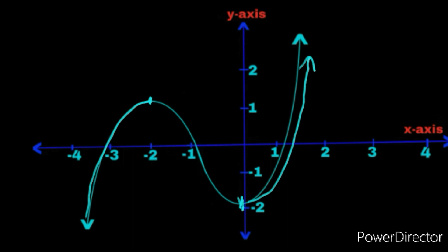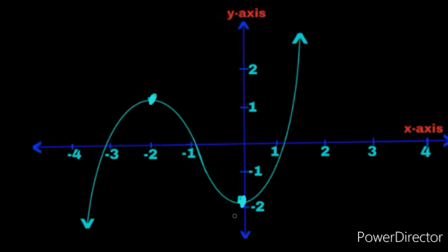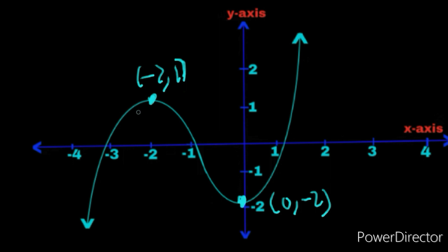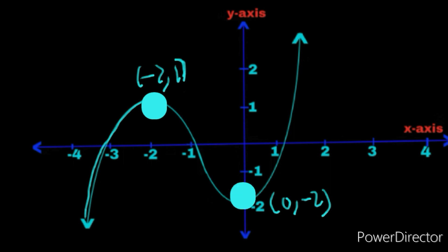When you follow the graph from left to right, your finger is going up. In this case, the x value of the first turning point is negative 2 — the turning point is (−2, 1). And the other turning point has x value of 0 — the turning point is (0, −2). Before x = −2, the graph is increasing. From x = −2 to x = 0, it starts decreasing. And after x = 0, the graph starts increasing again because your finger is going up.